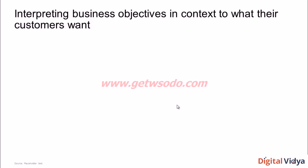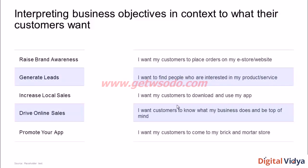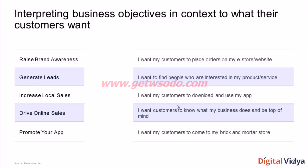Now that we've understood the five different business objectives — driving brand awareness, lead generation, store walk-ins, online sales, and app installs — let's interpret these in the context of what customers really want. We have an activity: on the left are the business objectives we just discussed, and on the right are what customers want. Pick each objective on the left and match it to the most relevant customer need on the right. I'll do one as an example: raising brand awareness matches with 'I want customers to know what my business does and be top-of-mind recall' — driving visibility so when customers buy, our brand is the first that comes to mind.